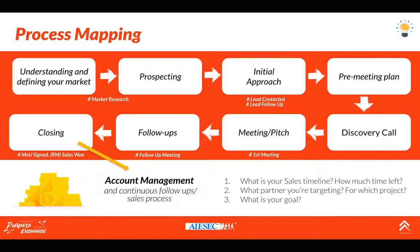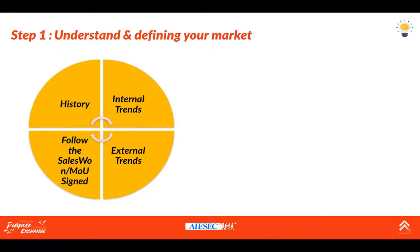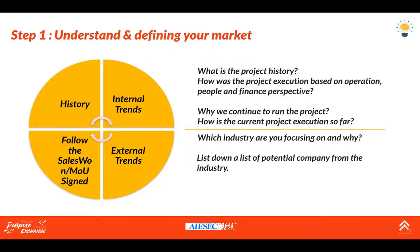First step: understanding and defining your market. Looking at the chart, it's separated into four parts in a circle. The upper part is history and internal trade — every single thing you need to know about your project: how many projects, which batch, how many times you've run it, how was the MOI, and the full history of project execution. Internal trade is the current execution itself — why you continue the projects, how is the current execution, how many EPs are approved, who you're targeting, who is the IR partner, and what's different from previous projects. Once you understand your internal thoroughly, you go to external, then answer which industry you're focusing on and why, based on your project understanding, and list companies from that industry.